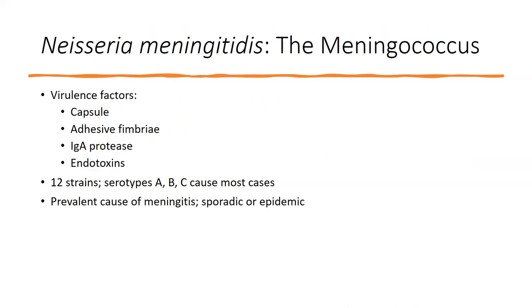Neisseria meningitidis has capsules, IgA protease, and fimbriae, but it also has endotoxins — which cause a much more symptomatic infection. There are lots of strains; 12 different types, with A, B, and C causing the majority of meningitis cases. We see this as a prevalent cause of meningitis, and we'll look at the causes by age group in a moment.